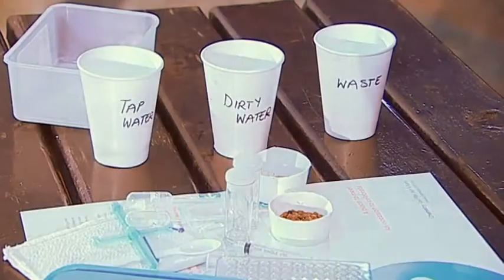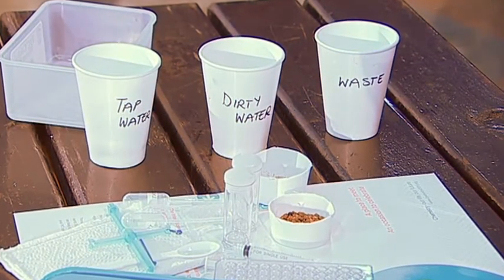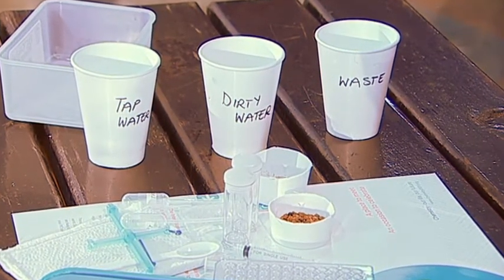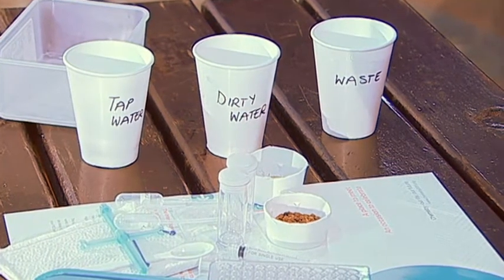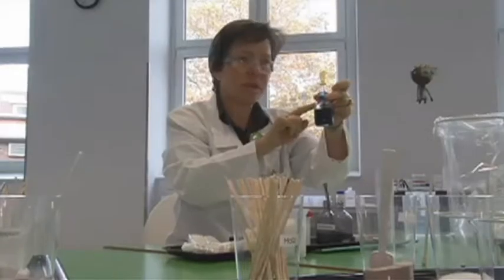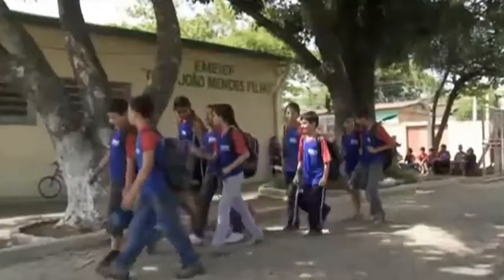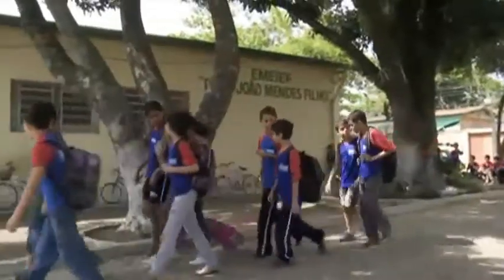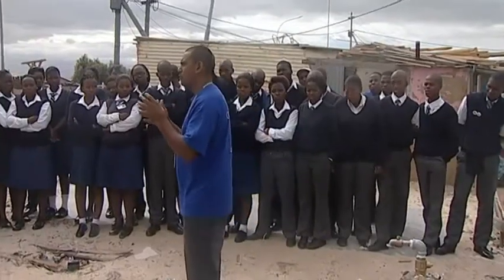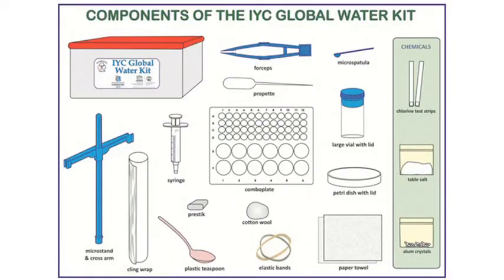The equipment and materials for the global experiment were chosen to be simple and inexpensive. But the difference between the equipment available in a school in the middle of a large first world city and those in a school in a small village can be vast. So to ensure that children from different parts of the world could contribute equally, we produced school packs for low-income communities. Each school pack contained ten global water kits and a school resource kit featuring everything required to conduct the experiment several times.